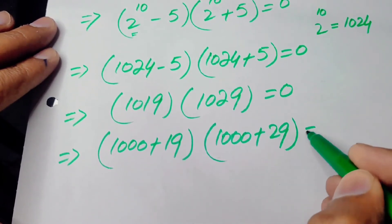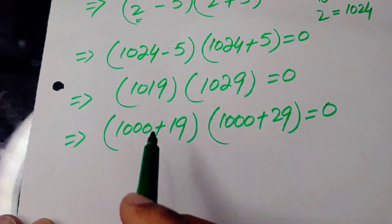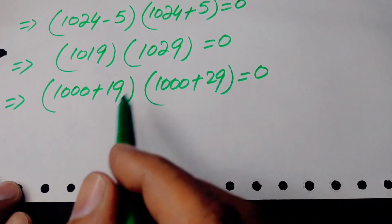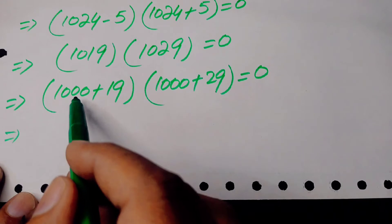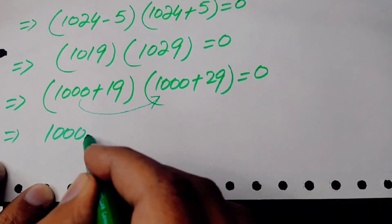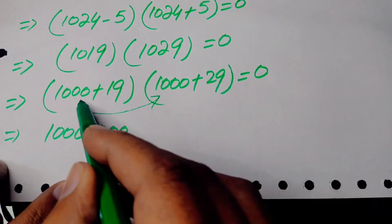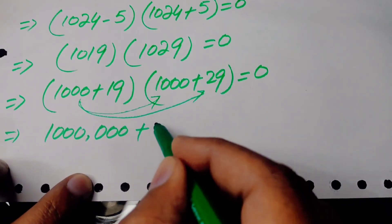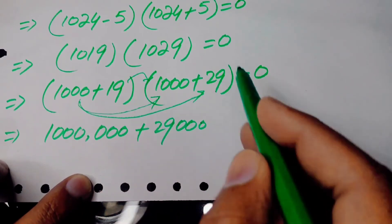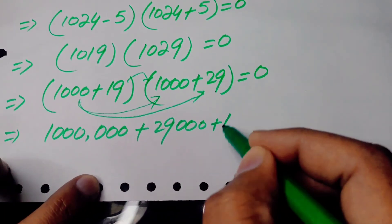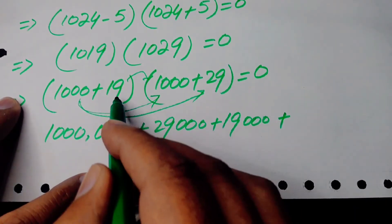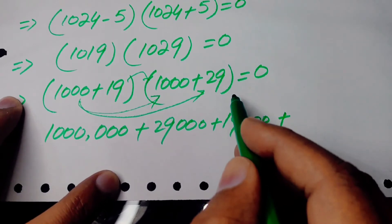Now we multiply these two factors. We multiply 1000 by 1000, then 1000 by 29 to get 29,000, then 19 by 1000 to get 19,000, and finally 19 by 29 to get 551. We sum up all these terms to find the required answer.